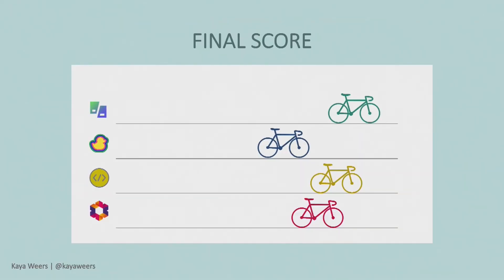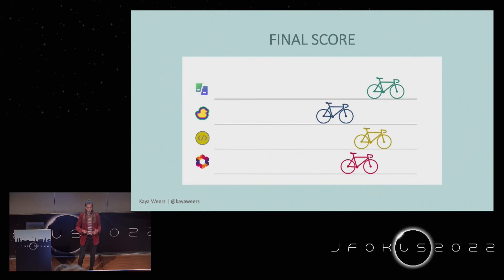The overall winner of the tour is Code With Me — the green bike. It was quite close, with Duckly a bit behind. Code With Me is really a valid winner: it's easy to use, has a lot of options, and the debugging is amazing. The only limitation is that you can only use it in IntelliJ, so if a colleague really wants to stay in a different IDE, that might be a problem — in which case Code Together with its broader IDE support would be the better choice.